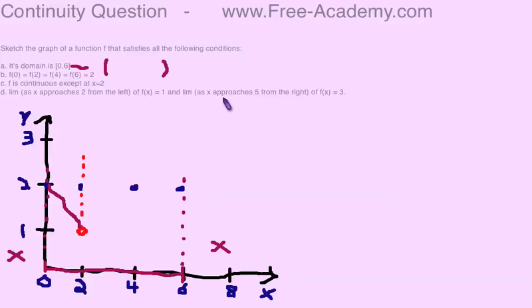The limit as x approaches 5 from the right of f(x) equals 3. So that means we're going to have a hole at 3 as well. Well, actually it won't be a hole. It'll be a point at 3, because it's continuous everywhere except at 2. So now it's just a matter of connecting the dots once we know these things.